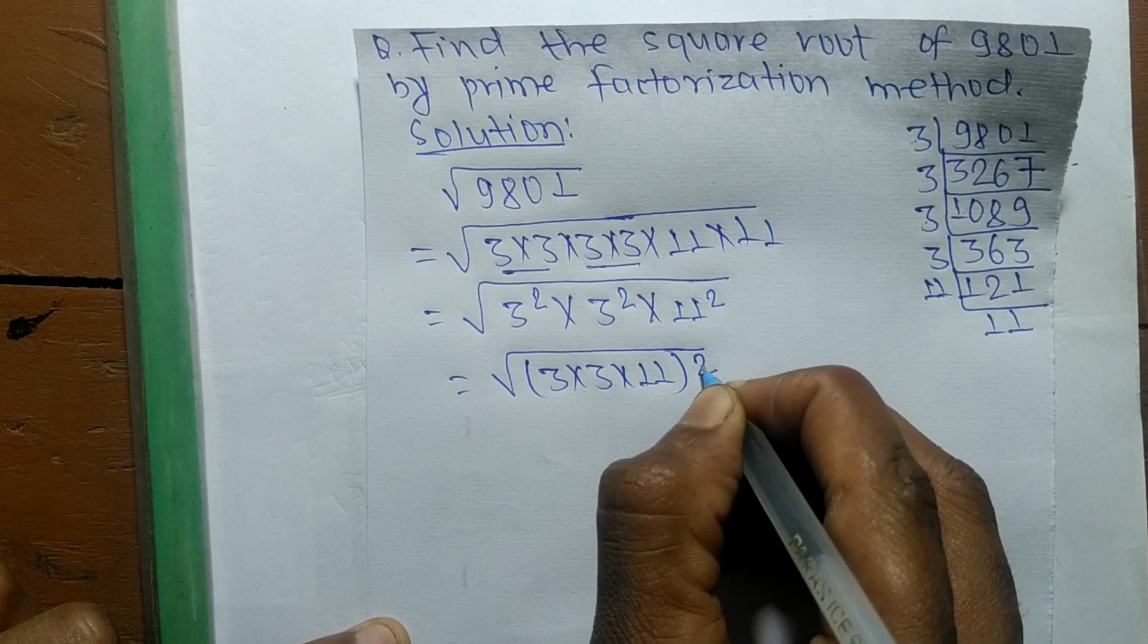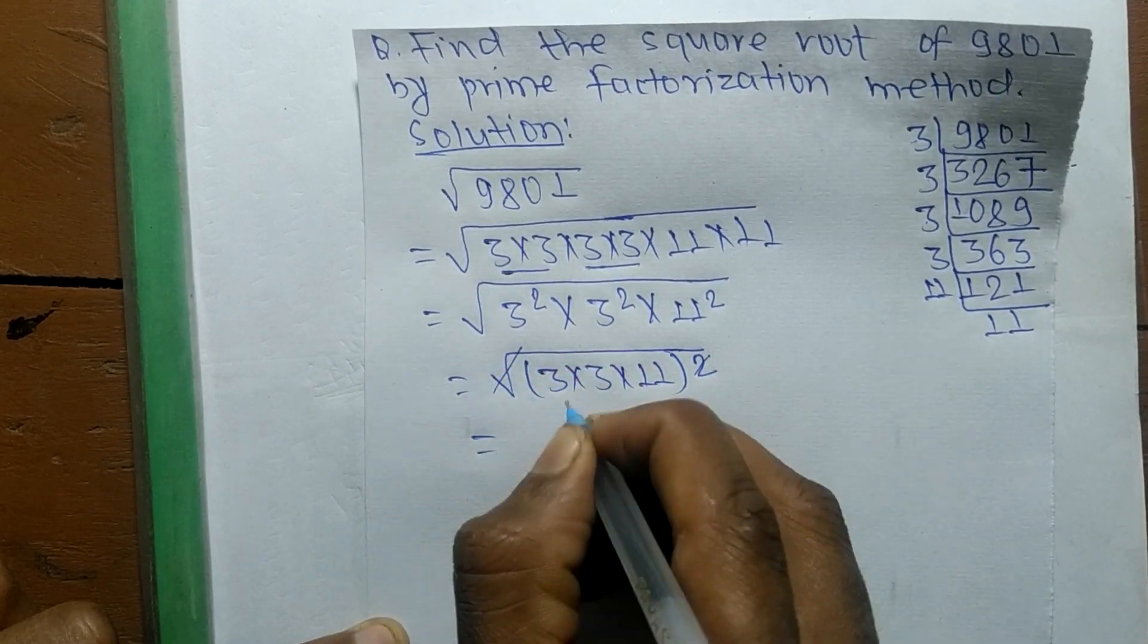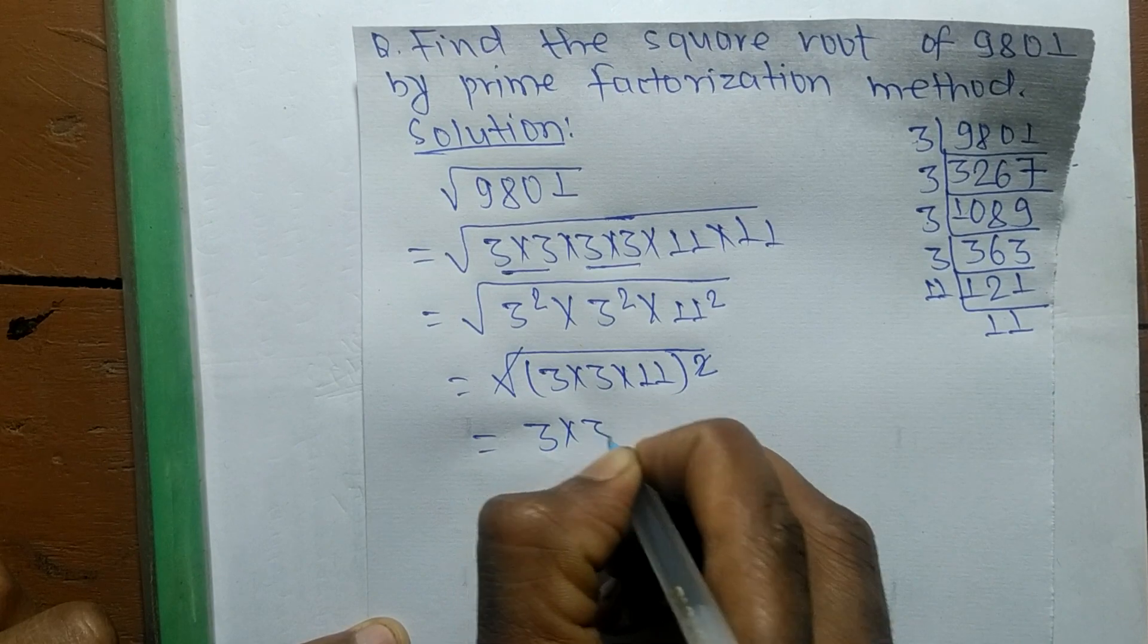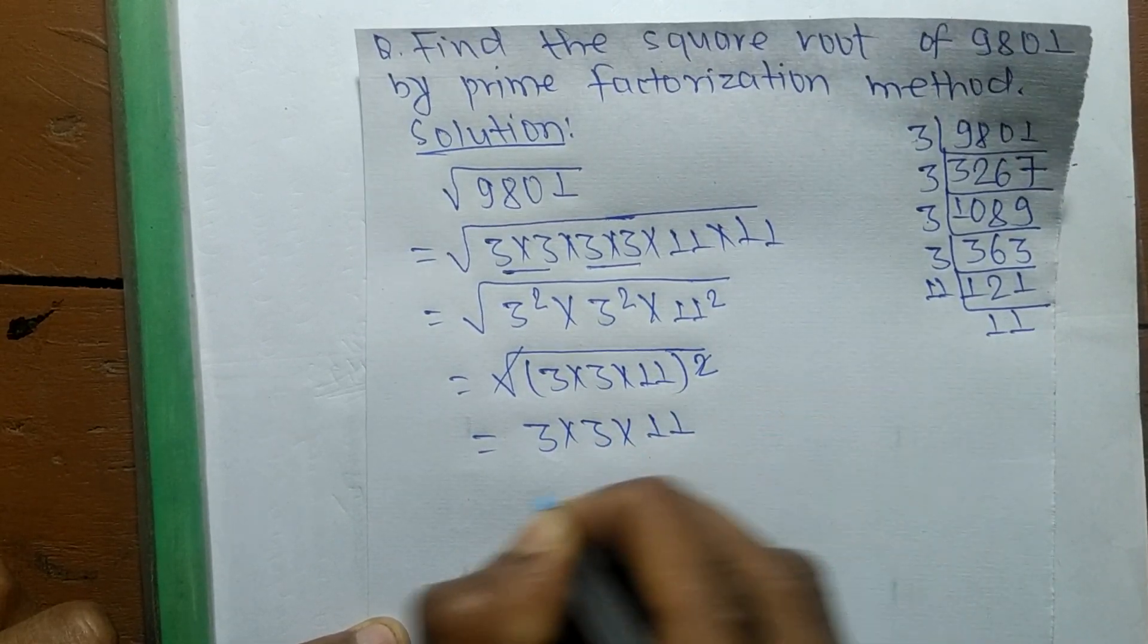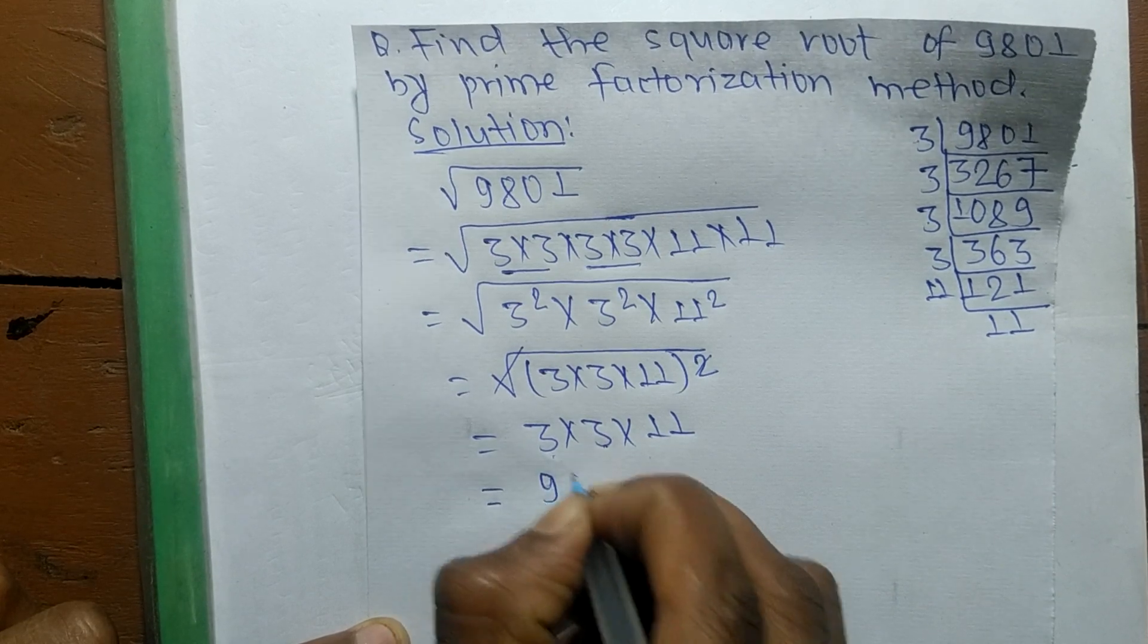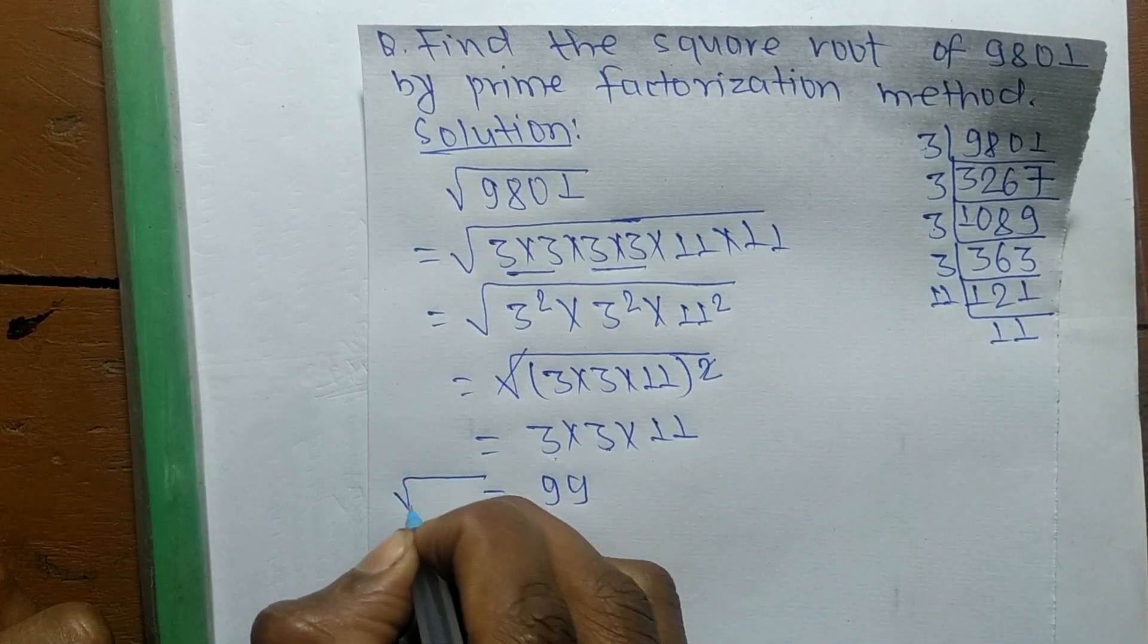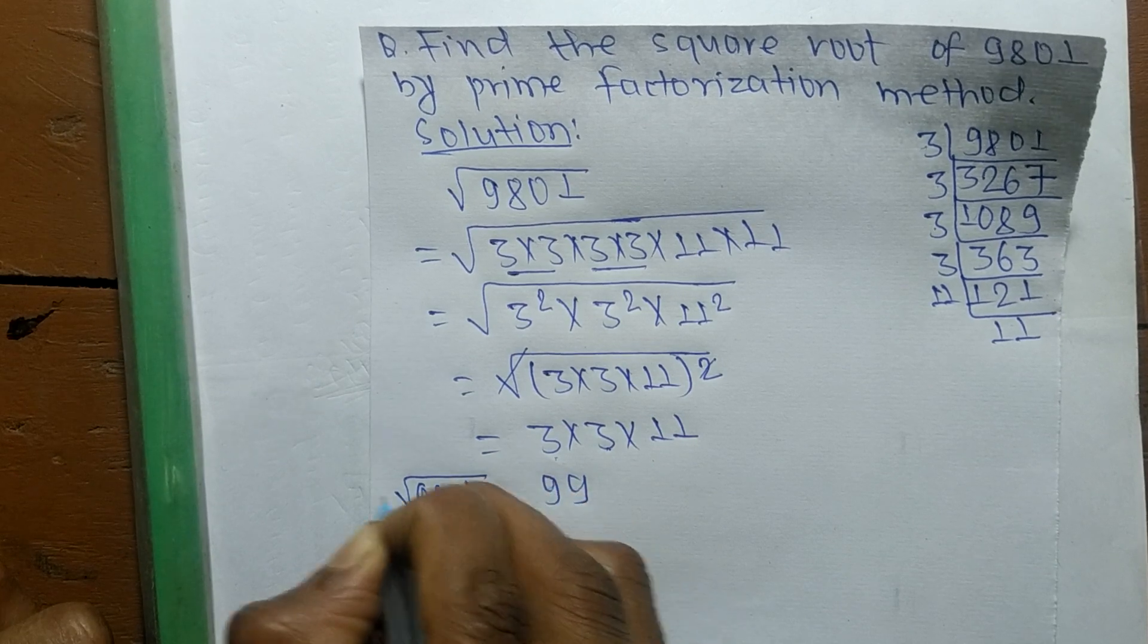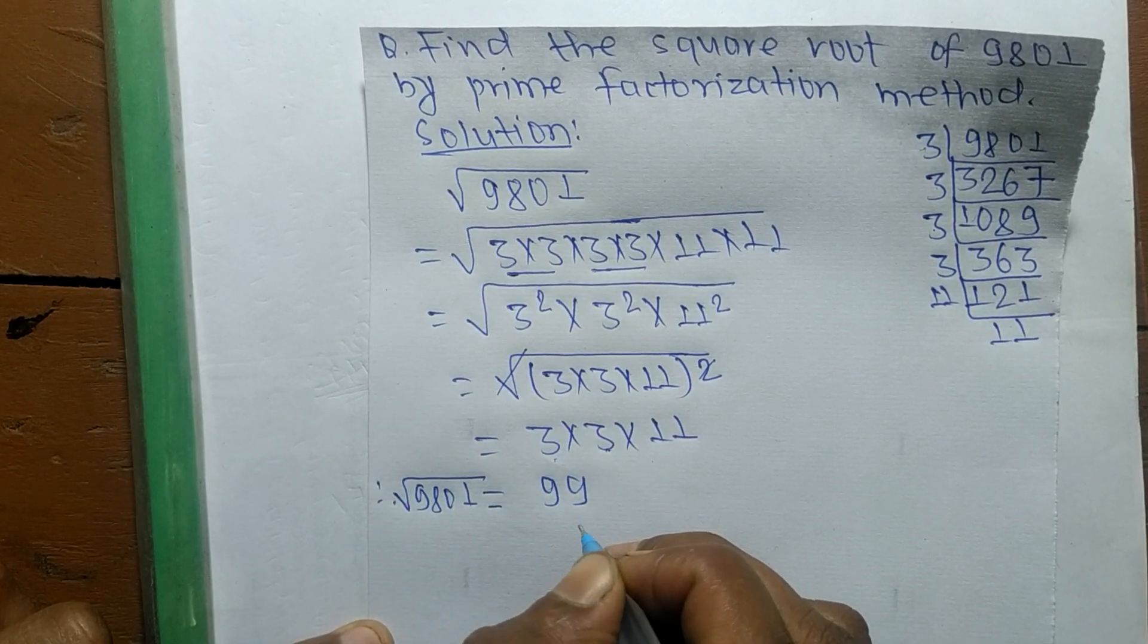So 3 times 3 is 9, 9 times 11 is 99. Therefore, the square root of 9801 is equal to 99.